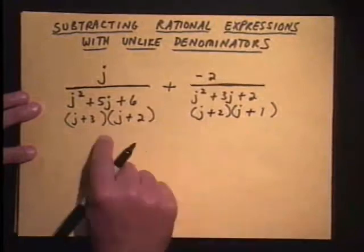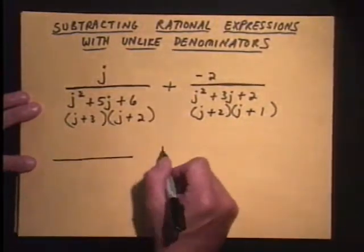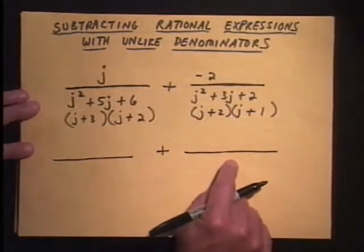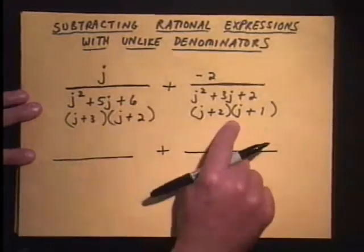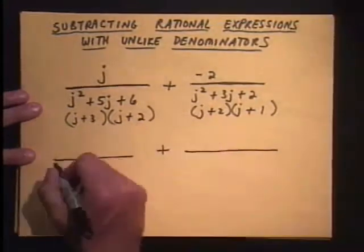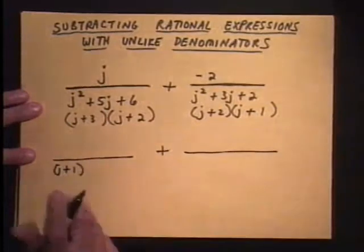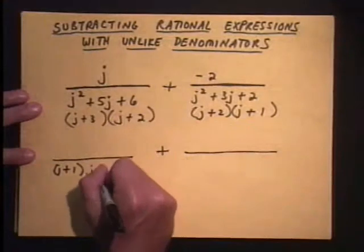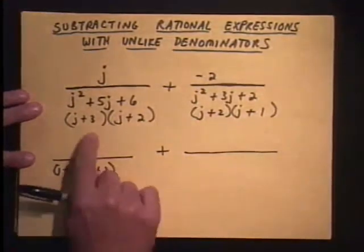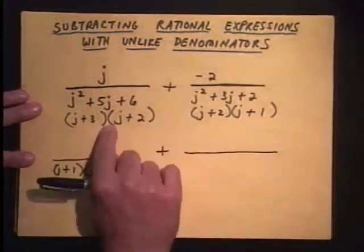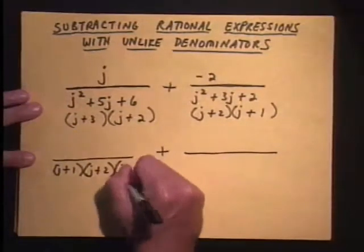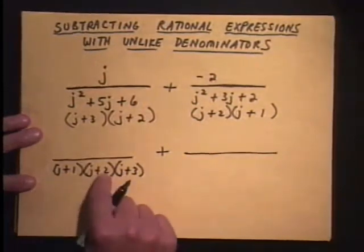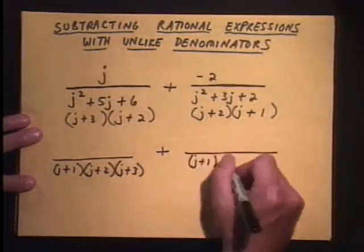Now that we've got these denominators factored, we can come down here and set up the shell, the LCD, the all-important LCD. What you do to get it: which one has the most j plus 1s in it? This one has one. Which one has the most j plus 2s? Each one has a j plus 2, but the most in any one, 1. Which other one do we need? A j plus 3. Never let it be said that Young doesn't have a sense of humor. Check the LCD out: j plus 1, j plus 2, j plus 3.